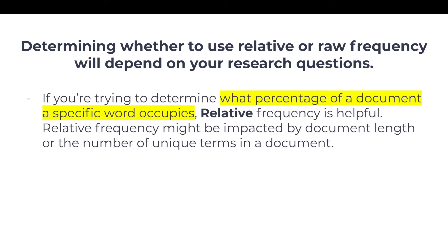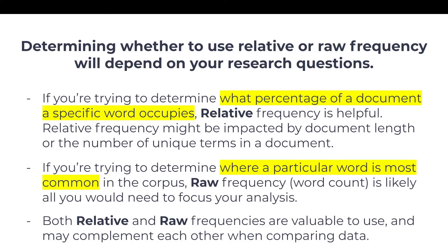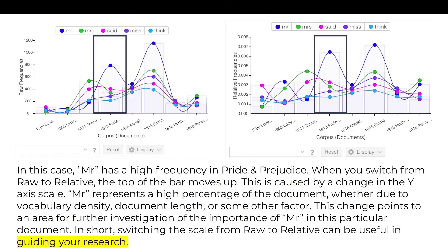If you're trying to determine what percentage of a document a specific word occupies, relative frequency is helpful, though it may be impacted by document length or the number of unique terms. If you're trying to determine where a particular word is most common in the corpus, raw frequency is likely all you need. Both are valuable and may complement each other. In this case, 'Mr.' has a high frequency in Pride and Prejudice, and when you switch from raw to relative, the top of the bar moves up due to a change in the y-axis scale. This change points to an area for further investigation and switching the scale can be useful in guiding your research.